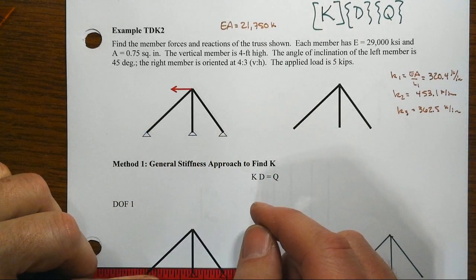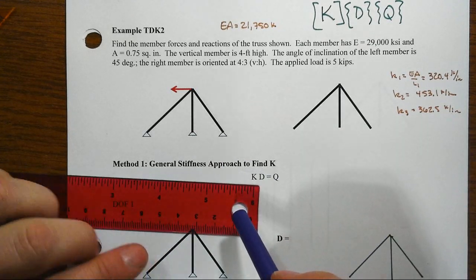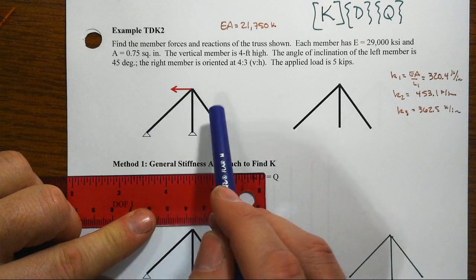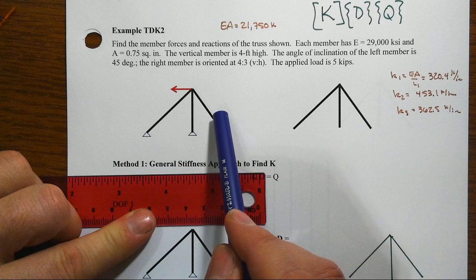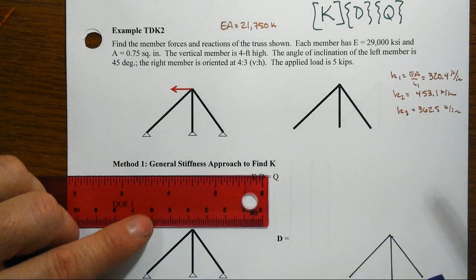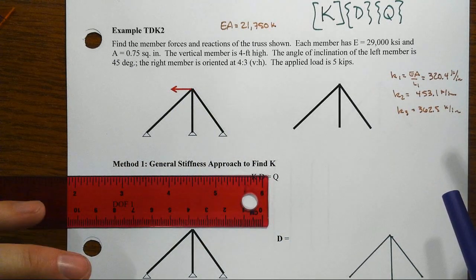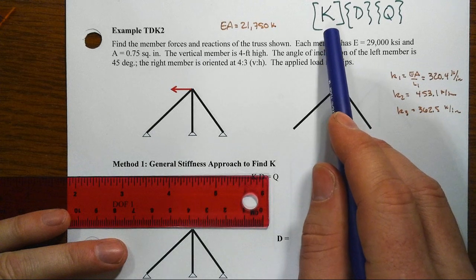It still is statically indeterminate, so that right away means that we'd like to do something more than just a really simple approach. We've got three members that have the same E and the same A, but they have different lengths. We only have one applied force here. What we're going to do in this video is just set everything up, and then we're going to apply two different approaches to assembling the big structural stiffness matrix.